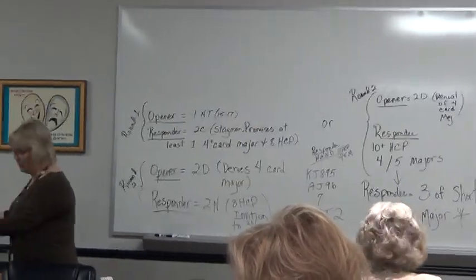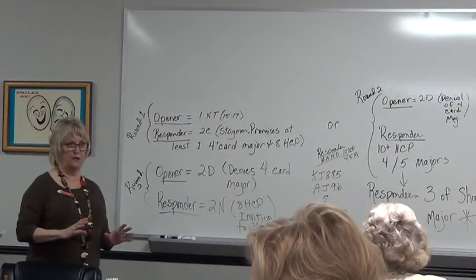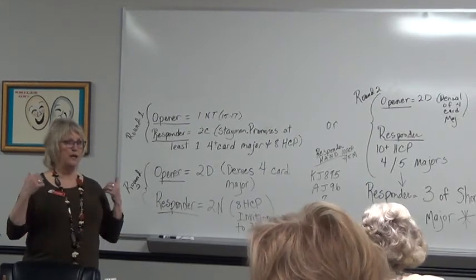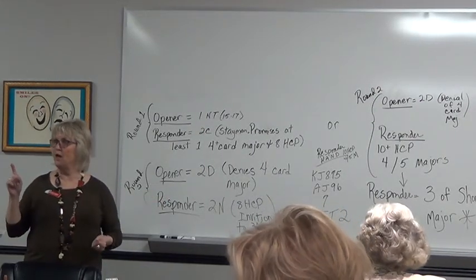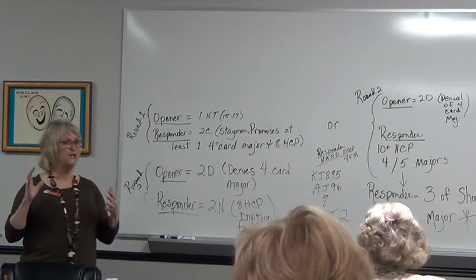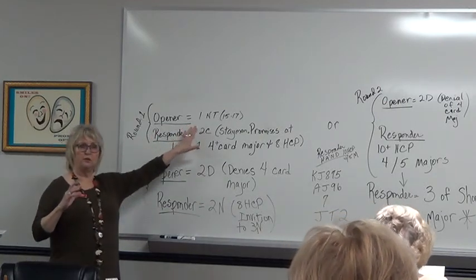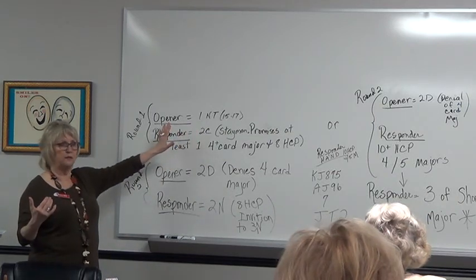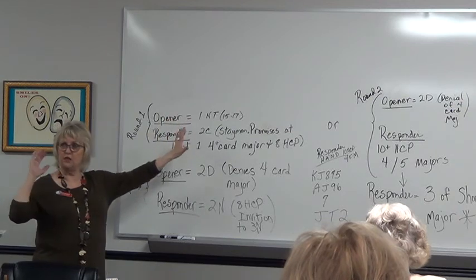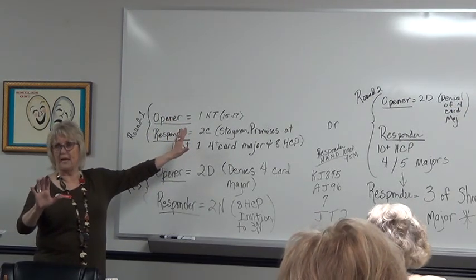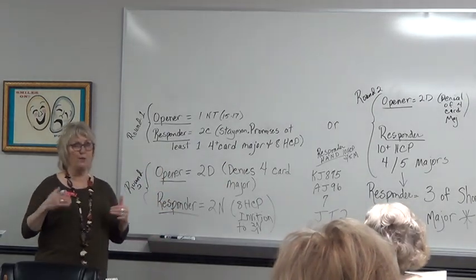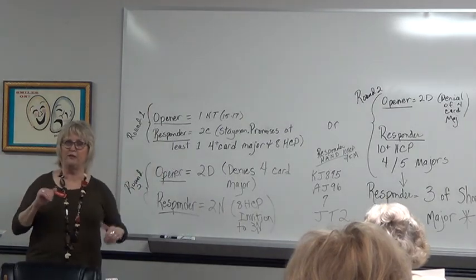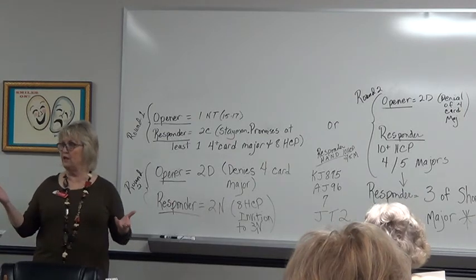Smolin is a condition that you can use. You don't have a lot of occasion to use it, but when you do, it is the best, most descriptive way for the responder to describe to the opener what they have. It starts like Stayman. It's used in conjunction with Stayman. It begins with the opener bidding one no trump, and these examples are all with no interference.